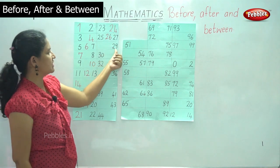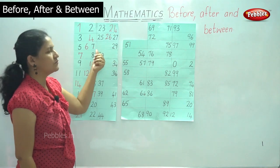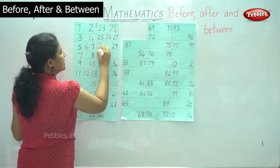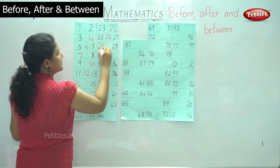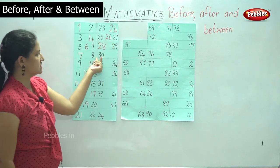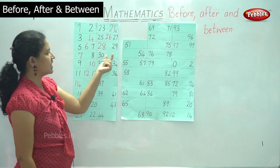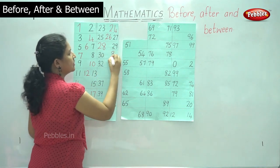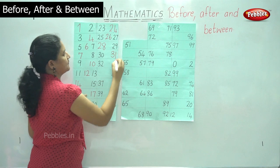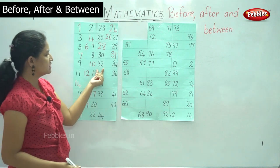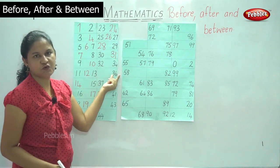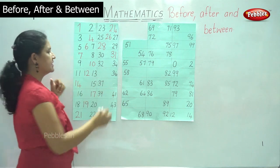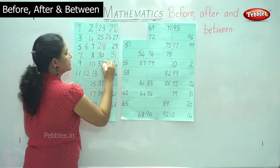Then we have number twenty-nine, and what comes before twenty-nine is number twenty-eight. We have number thirty, and what comes after thirty is number thirty-one. We have numbers thirty-two and thirty-four, and what comes between thirty-two and thirty-four is number thirty-three.